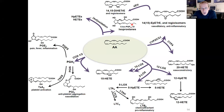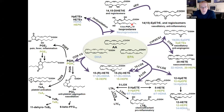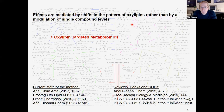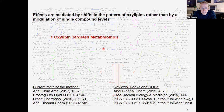This becomes even more complicated if you keep in mind that not only arachidonic acid, but also other polyunsaturated fatty acids like DHA and EPA can be converted by this enzyme machinery. So we have a lot of different metabolites formed within the arachidonic acid cascade. The challenge for an analytical chemist and for the biologist interpreting the data is that biological effects are rather mediated by a change in the pattern of the oxylipins rather than by a single compound.